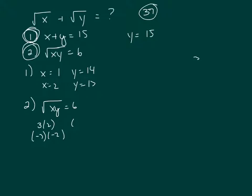y would be 15 minus x and then substitute that in the second equation. So that would be the square root of x times y, which is 15 minus x, equals 6.